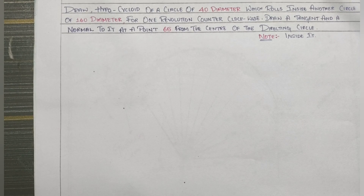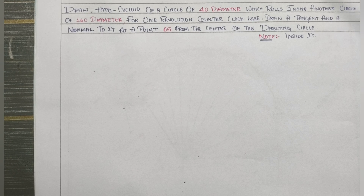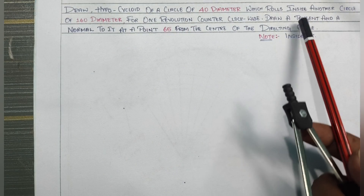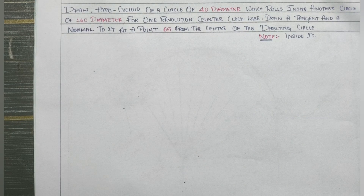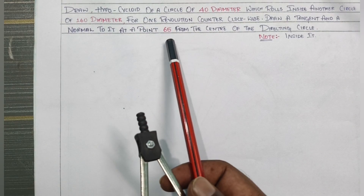Hi buddies. Draw the hypocycloid of a circle of 40 diameter which rolls inside another circle of 160 diameter for one revolution counterclockwise. Draw a tangent and normal at a point 0.65 from the center of the directing circle. Hypocycloid means rolling inside another circle. We have diameter 40 and diameter 160, and we will draw a tangent at 65 distance.